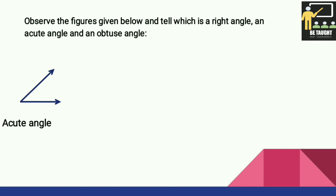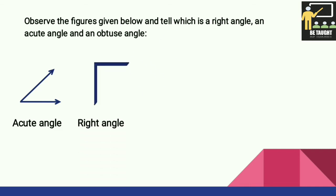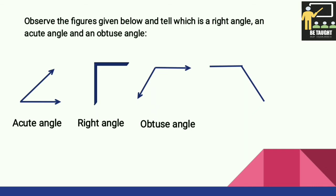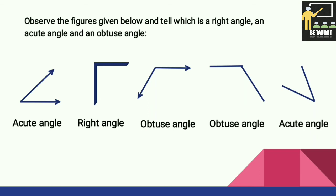Yes, this is a right angle. Here it is an obtuse angle — this is more than 90 degrees. This is a right angle. This is more than 90 degrees, so it is an obtuse angle. And this is less than 90 degrees, so it is an acute angle.